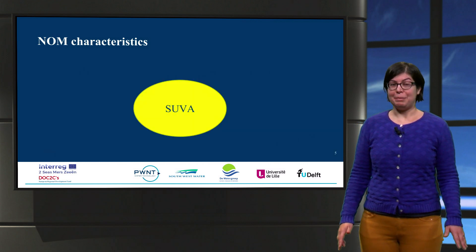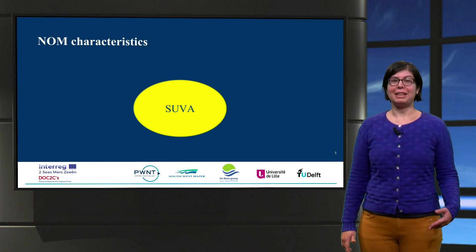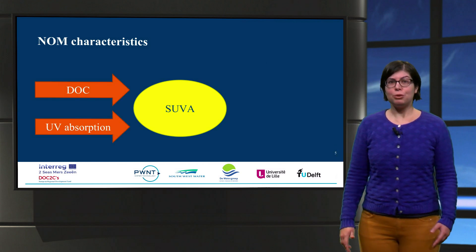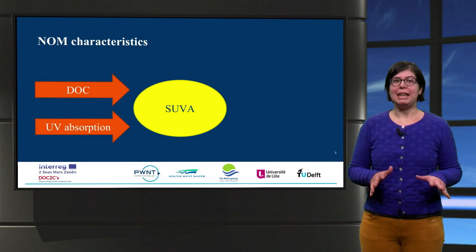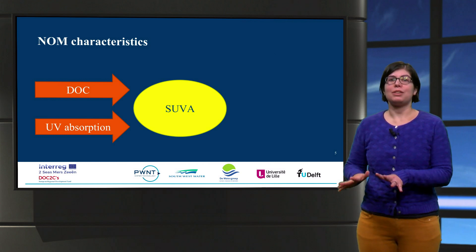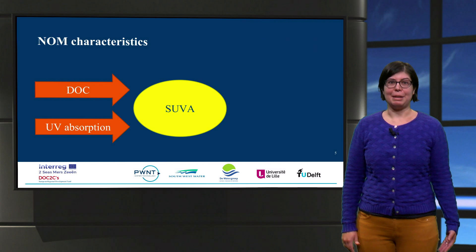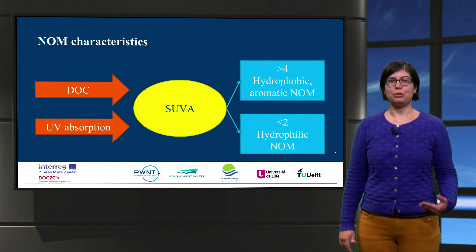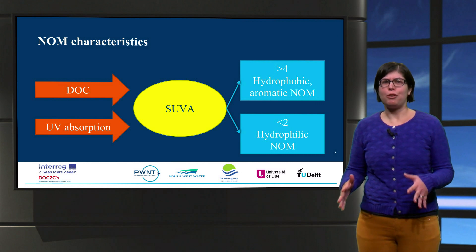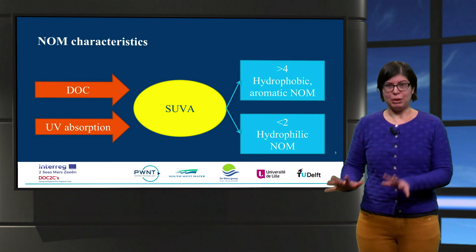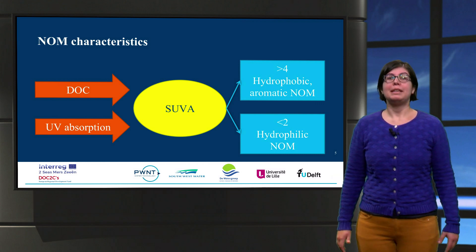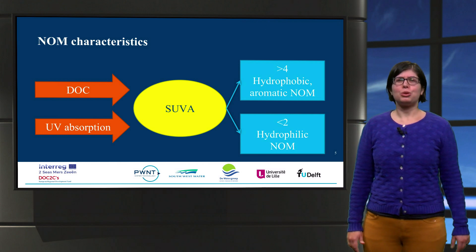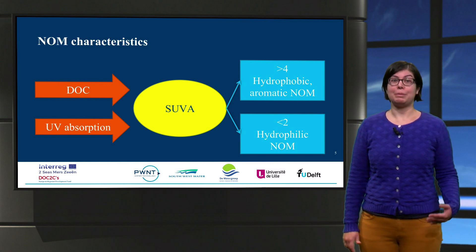A very common way to determine the character of NOM in water is using its SUVA value. The SUVA value relates the UV absorption with the dissolved organic carbon of a water sample. In water with higher SUVA, NOM is more hydrophobic and aromatic, and with lower SUVA, NOM is more hydrophilic. But why do we want to get rid of NOM during the treatment processes?